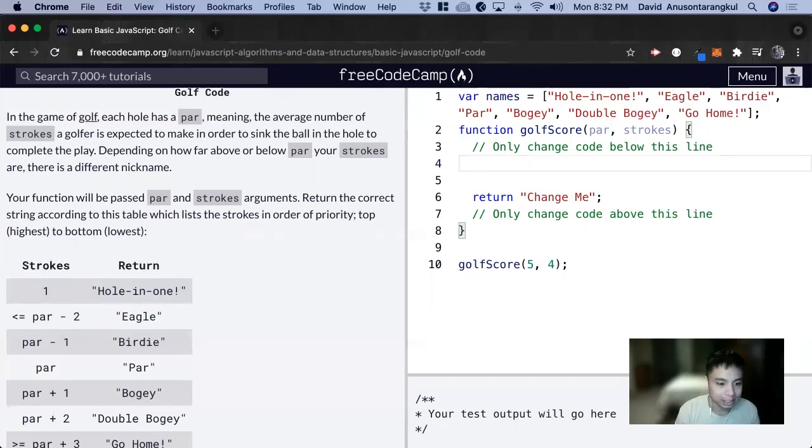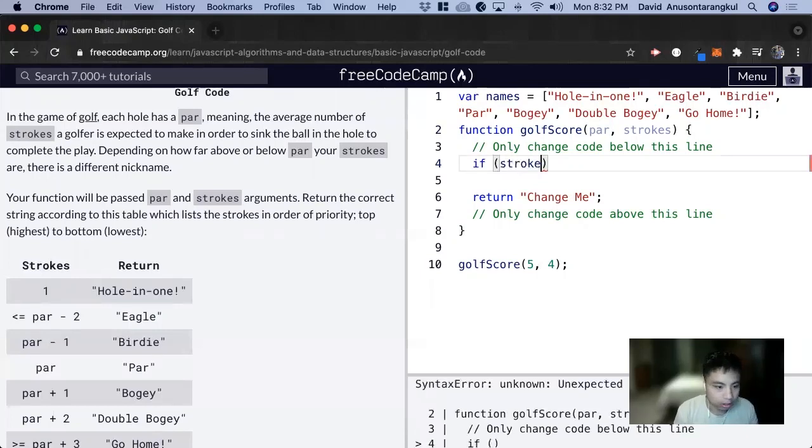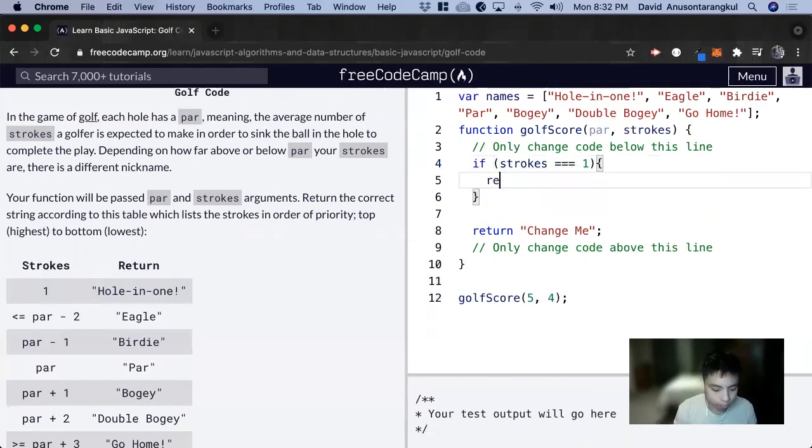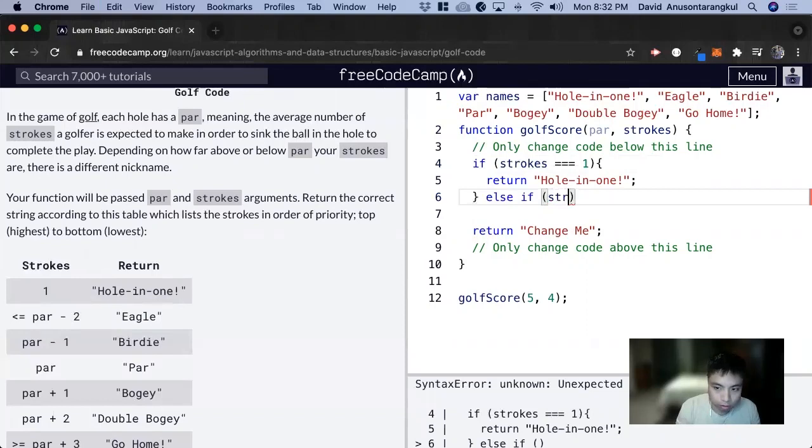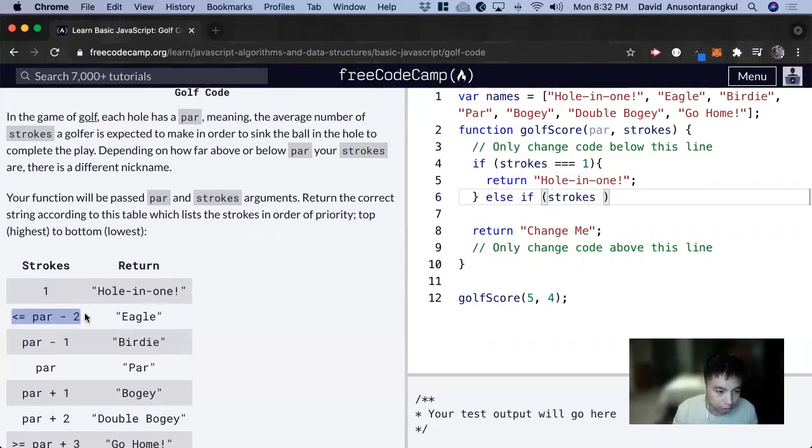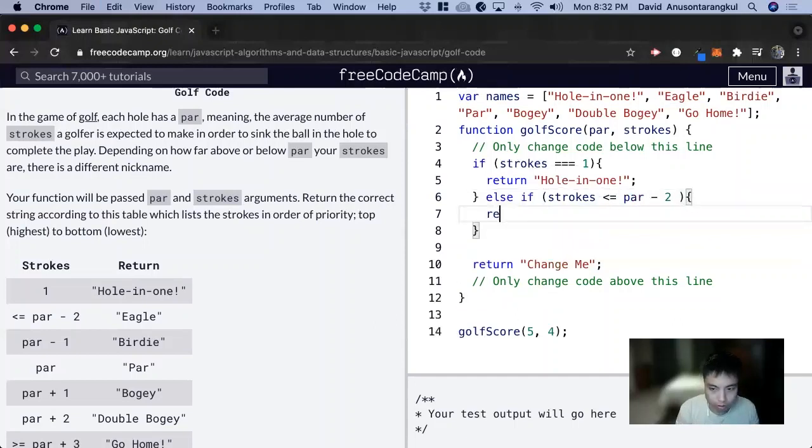So the first condition is if strokes is equal to one, we return Hole-in-one, and then we do a semicolon. Else if strokes is less than or equal to par minus two, we return Eagle, like that.